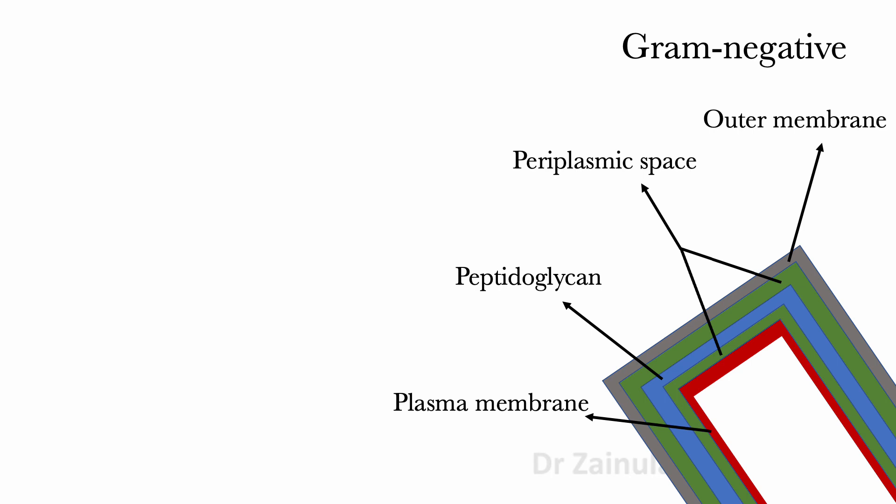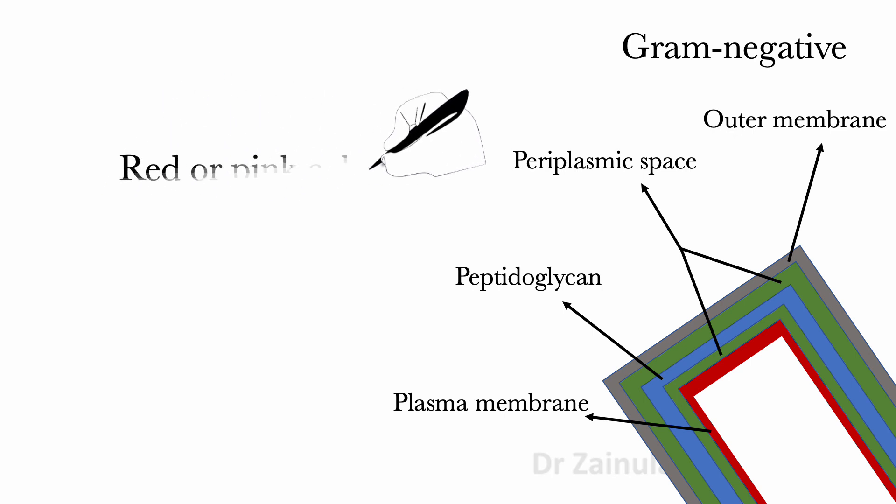In contrast, gram-negative bacteria contain a thin layer of peptidoglycan, about 2 to 3 nanometers. Gram-negative bacteria cannot retain violet stain after decolorization, and its color is red or pink after staining.